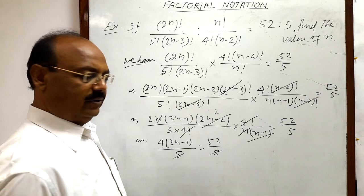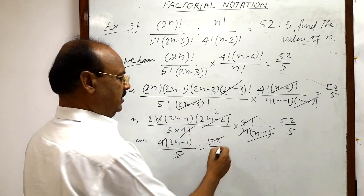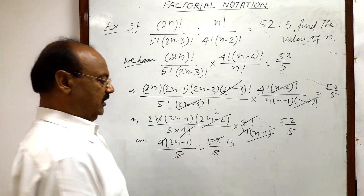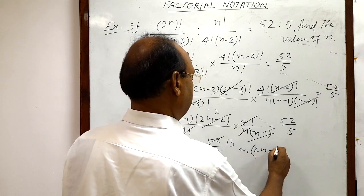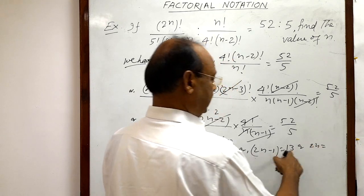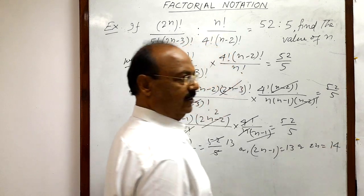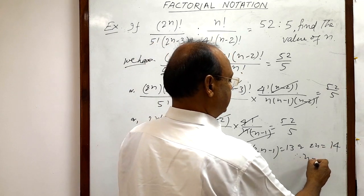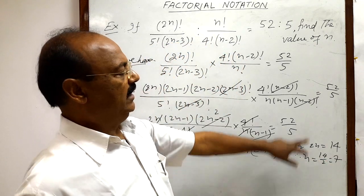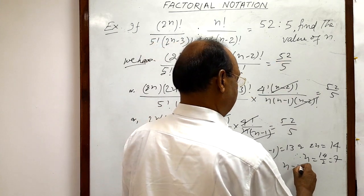The denominator 5 cancels out, and 4 cancels with 52 giving 13. So 2n minus 1 equals 13. From this, 2n equals 13 plus 1, which is 14. Therefore n equals 14 divided by 2, which equals 7. So the value of n is 7.